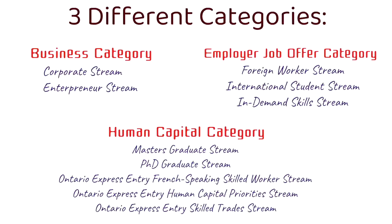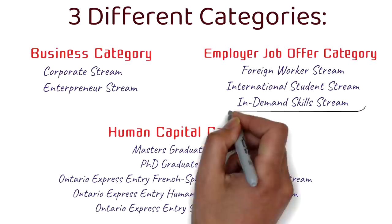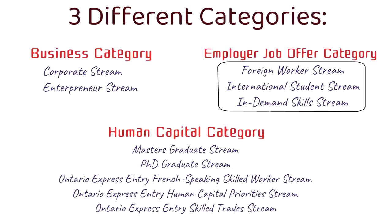Out of all these different categories and streams, the new EOI process would apply to five streams: foreign worker stream, international student stream, in-demand skill stream, master's graduate stream, and PhD graduate stream. Note that the most popular stream — Ontario Express Entry human capital priority stream — will still follow the old process; there won't be an EOI process for it, at least for now.